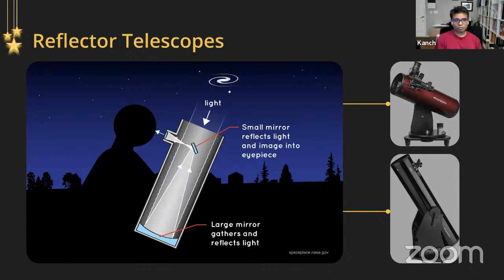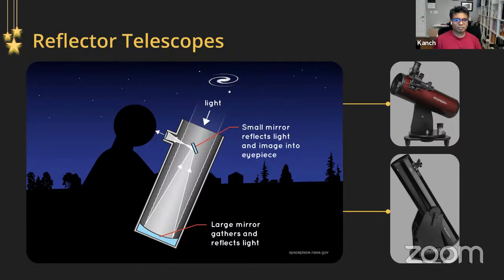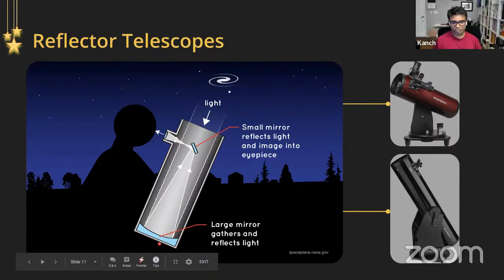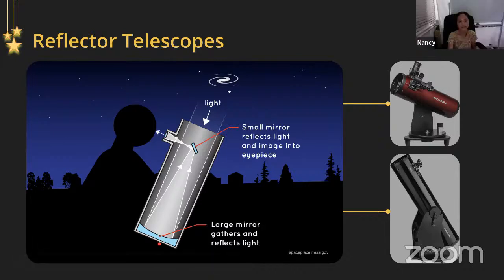The refractive telescope does the same two functions — light gathering and magnification — but in a different way using lenses rather than mirrors. Most of the large telescopes you've heard of, like the Hubble Space Telescope or the Keck Telescope in Mauna Kea, are some sort of reflector design — they have mirrors as a key component. Both refractor and reflector telescopes work under the same set of principles, just with different designs.